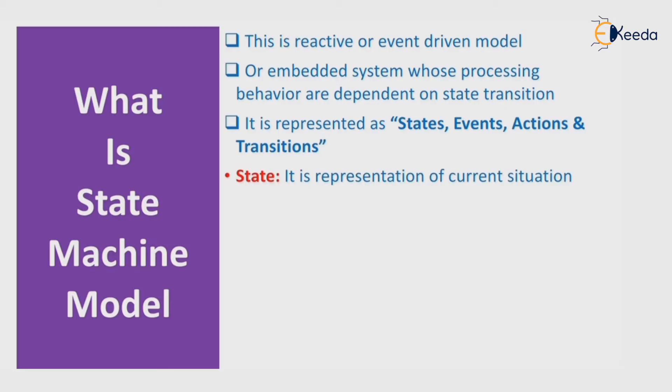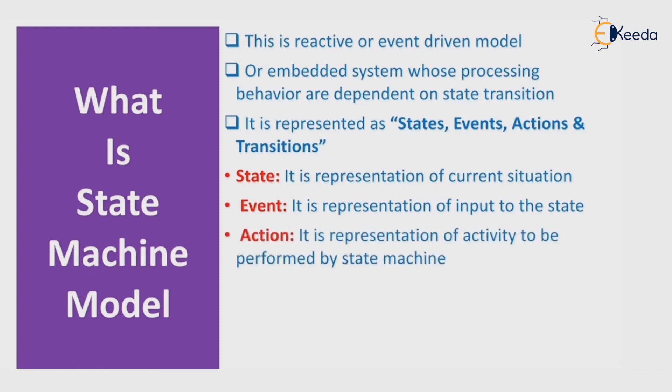First, state — it is the representation of a current situation. Event — it is the representation of input to the state. Action is the representation of an activity to be performed by the state machine. And transition is the movement from one state to another state. In that way, you can represent a state machine model.